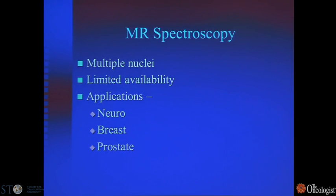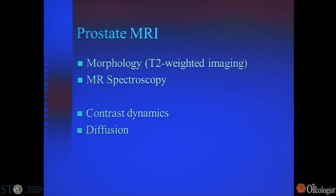Moving on to MR spectroscopy — in imaging we focus on proton spectroscopy, though other techniques such as phosphorus spectroscopy exist. MR spectroscopy has limited availability compared to imaging in general, but there are applications in neuro, breast, and prostate. For prostate MR, we focus on T2-weighted or fluid-sensitive imaging for anatomic imaging, and can use MR spectroscopy to look at the spectroscopic signature of prostate cancer, as well as contrast dynamics and diffusion.